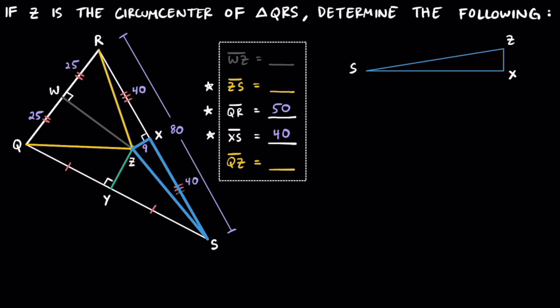Remember, segment XZ represents the perpendicular bisector, so that's where the right angle is. We were given that XZ was equal to 9, so we can go ahead and label that over here. And we had figured out that segment XS was equal to 40. To find the length of segment ZS, we're going to use the legs of these triangles of 9 and 40 to find the length of it, which is the hypotenuse.